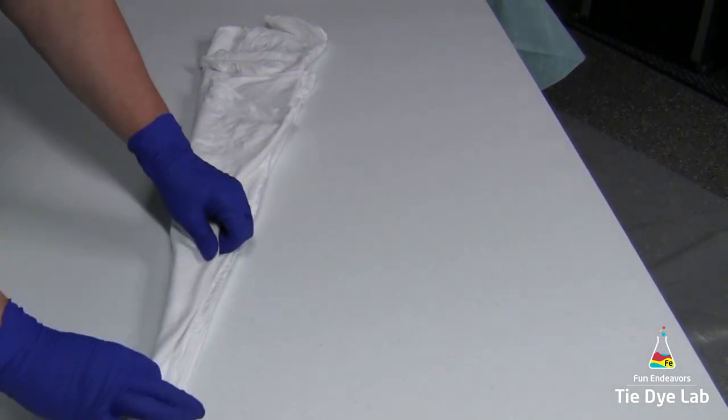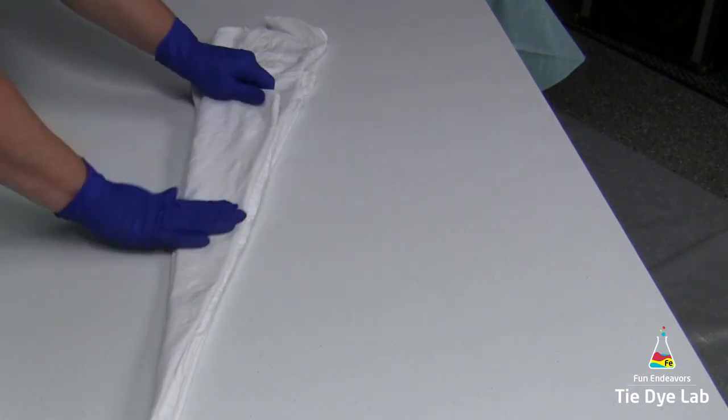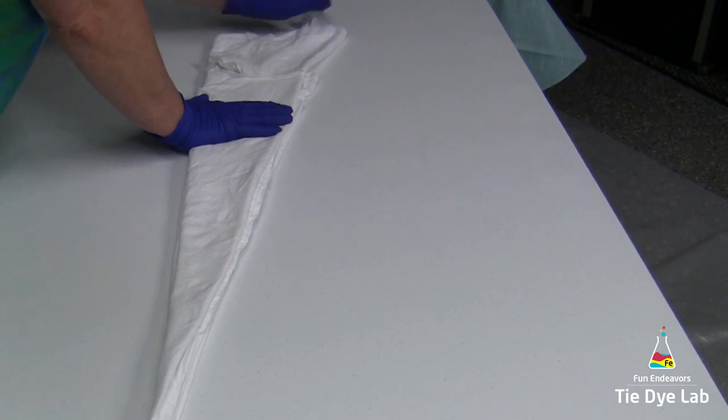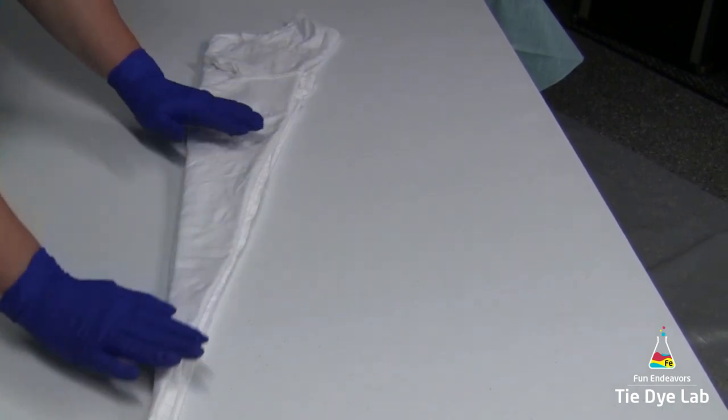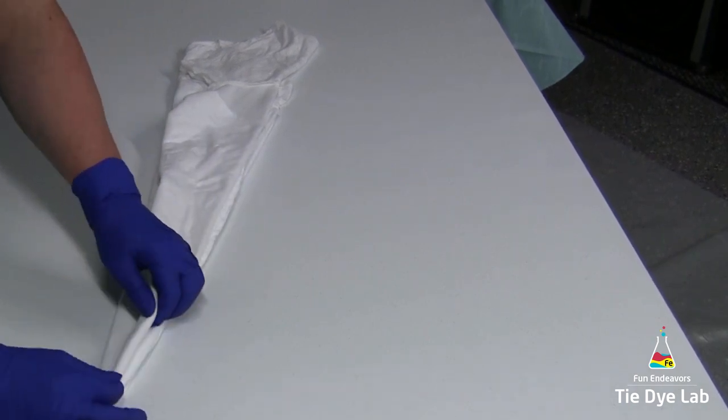One side of my shirt, the side toward me, has two seams or two folds. The other side of the shirt that's away from me has all the other folds. I'm going to put one more fold in this star flower.